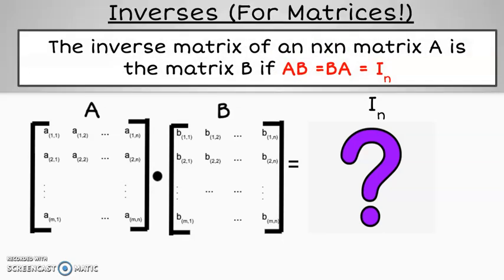The inverse matrix of an n by n matrix A is the matrix B if A times B equals B times A, which equals what's known as the identity matrix. Note that we are saying both matrices A and B are square. Why would they need to be square?